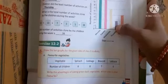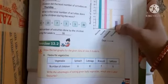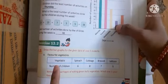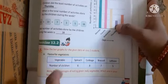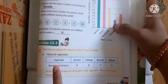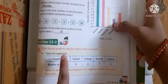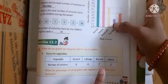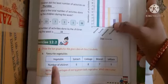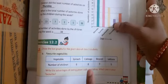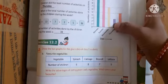This question asks us to draw a bar graph for the given data of class 3 students. You can see there are two columns: vegetable and number of children. The vegetables are spinach, cabbage, broccoli, and lettuce. Spinach is liked by 6 children, cabbage by 8 children, broccoli by 7, and lettuce by 5.